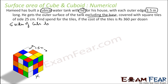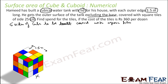The base is not required as it has to be built into the ground. It has to be covered with square tiles, and each tile side is 25 centimeters. Note that the tank edge is in meters, so let's convert everything to centimeters — 1.5 meters is 150 centimeters.